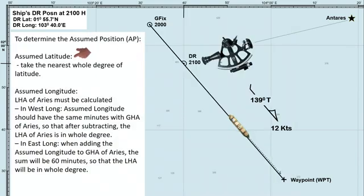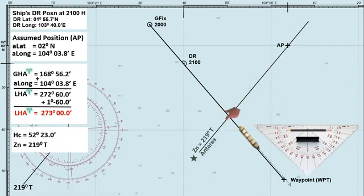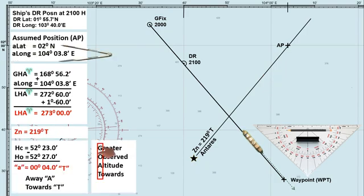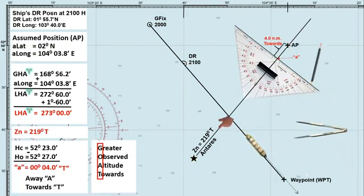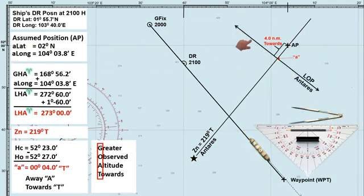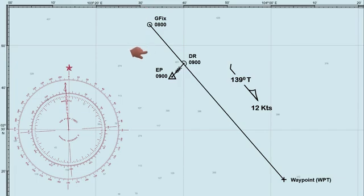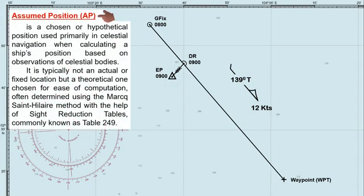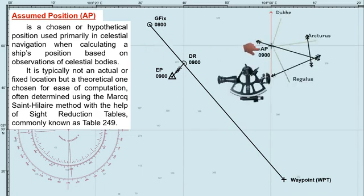The first part of this video explains how to determine the assumed position, while the later part will guide you on how to use AP to find the ship's line of position through celestial observation. This scenario is from my previous video, where I explain the difference between dead reckoning and estimated position. To determine the assumed position, I'll use the same scenario, since AP is often based on either DR or estimated position, serving as a reference point for celestial navigation.